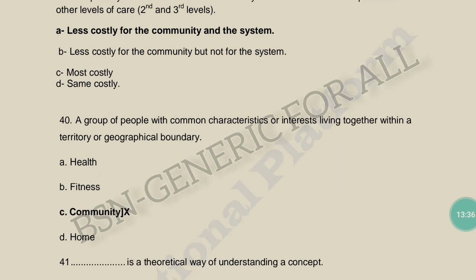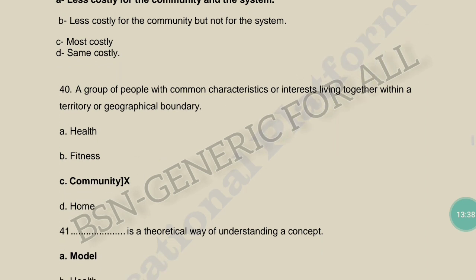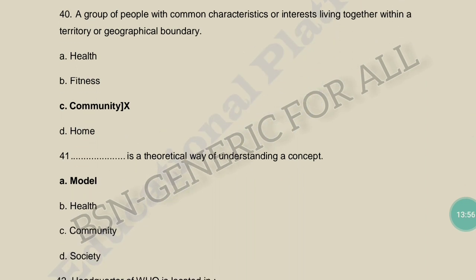A group of people with common characteristics and interests living together within a territory or geographical boundary — this is a community. For example, the Jewish community, Sikh community, Muslim community, or nursing community — their characteristics and group interests are the same.